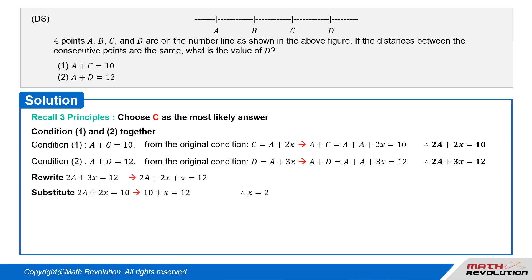If we rewrite this as 2 times A plus 2 times x plus x equals 12, we can substitute 10 in for 2 times A plus 2 times x. The equation would then be 10 plus x equals 12.